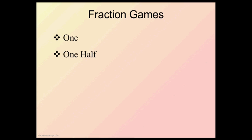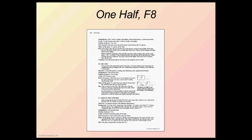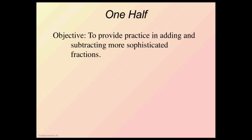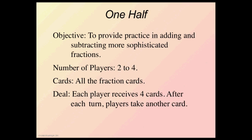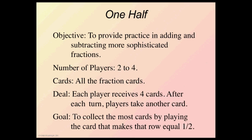All right, the next game we're going to play is one-half. Now, this game is game F8 in the Math Card Games book. One quick note with the Math Card Games book. As you start in a chapter, in this case a fraction chapter, and you work your way through it, F1 is going to be the easiest game. And as we get going, they're going to get harder and harder and harder as we go along. So this game is a little bit harder than the one we did previously. So this is game one-half, number F8. Our objective is to provide practice in adding and subtracting of more sophisticated fractions. Two to four people, again, are going to play. And we're going to use all the fraction cards here. Each player gets four cards. And after a turn, the players pick up another card, just like we did before. And our goal is to collect the most cards in a row, then make the row total one-half.